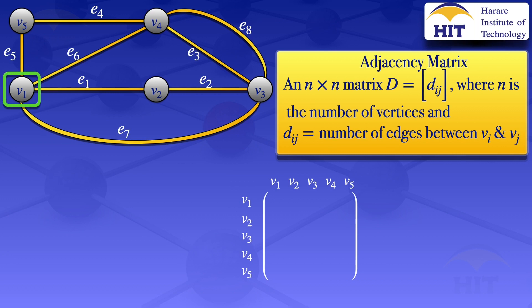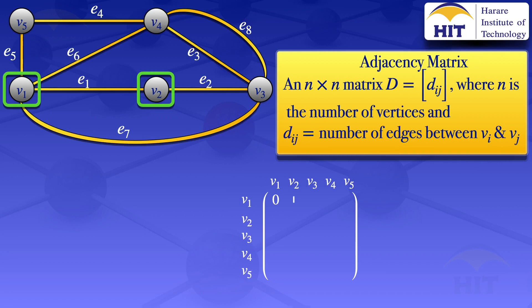Looking at vertex v1: between v1 and v1, we check if there is a loop — there is none, so we put zero. Between v1 and v2, there is one edge, e1, so we put a one. Since the number of edges between v1 and v2 is the same as between v2 and v1, we also put a one at position v2, v1.